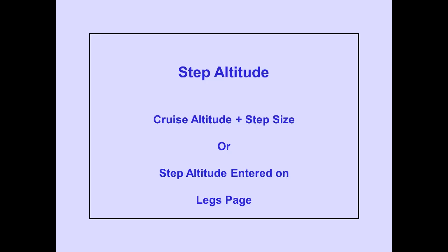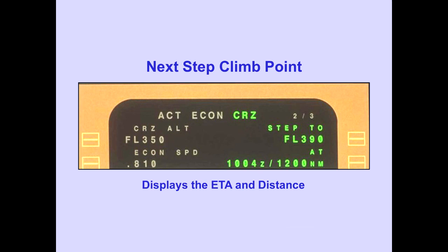The step altitude is either the cruise altitude and step size interval, or the planned step altitude entered on the lakes page. If a step 2 altitude is displayed, the at-line is displayed. ETA and distance to the next step climb point is displayed on the at-line.